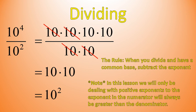Quick note: in this lesson we're only going to be dealing with positive exponents. Although this rule does work with negative exponents, we're not going to get into that. So for our purposes, the exponent of the numerator needs to be larger than the exponent of the denominator. If you're making up your own practice questions, just make sure the numerator exponent is larger than the denominator exponent and you'll be fine.